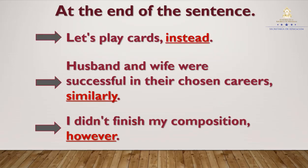El segundo lugar en el que se usan los adverbs of conjunction es al final de una oración — at the end of the sentence. Here we have another example. Let's play cards instead. Aquí se usa instead porque lo usamos como un sustituto de algo más que ya se dijo previamente. En el segundo ejemplo: Husband and wife were successful in their chosen careers, similarly. Aquí usamos similarly porque estamos expresando una similitud. La siguiente: I didn't finish my composition, however. Aquí se usa however porque está expresando un contraste.